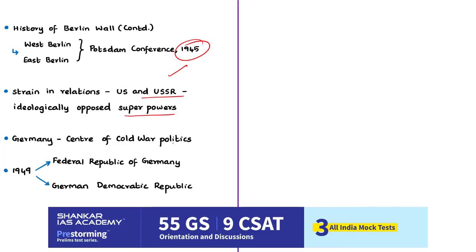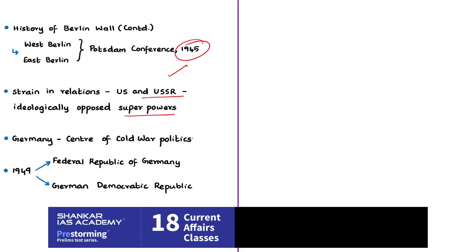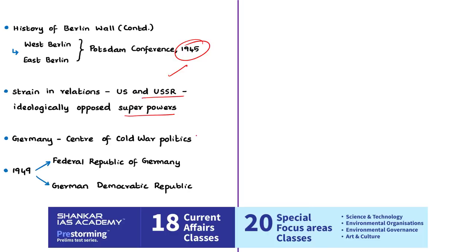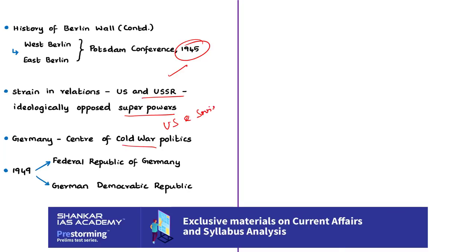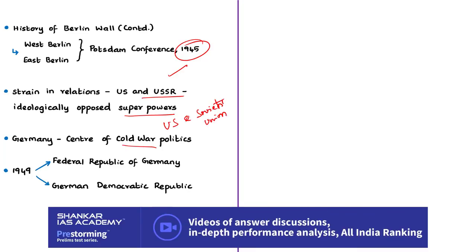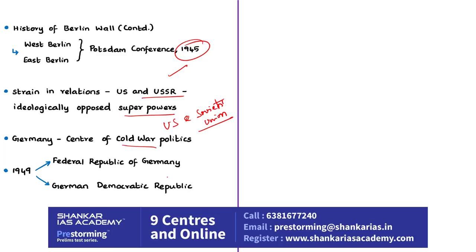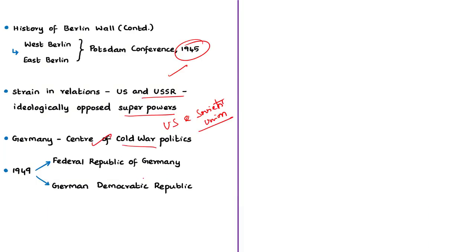Relations between them strained further when they engaged in the Cold War — meaning these countries tried to influence and spread their ideologies in other countries without engaging in any direct war. Germany became a focus of this Cold War politics, resulting in more pronounced divisions between the East and Western parts of Germany.